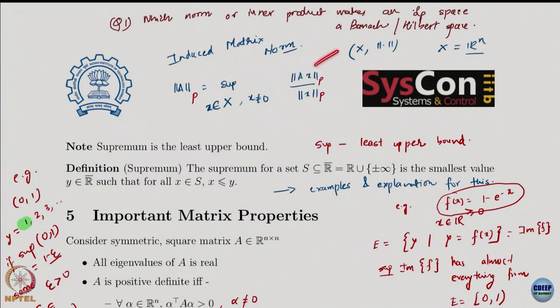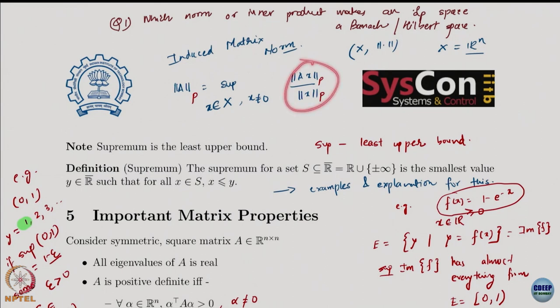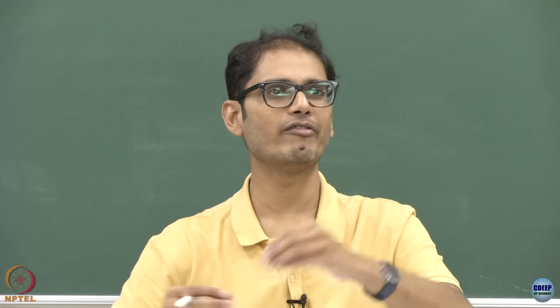You compute the P norm of the numerator and P norm of the denominator. Since x is not 0, this is a valid operation. You look at the ratio, and when you look at the supremum, it is somehow the maximum — a generalization of the maximum. When you take a supremum of the ratio, you are essentially measuring the maximum magnification that a matrix gives to a vector.